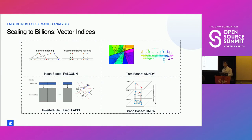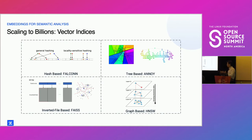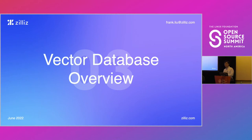In a traditional database you might have a bitmap index, a clustered or unclustered index, or a B-tree-based index. The same goes for a vector database — we have vector indexes to search across large embedding vectors. There are various types, and each could be an entire 30-minute presentation on its own, like ANNOY for example.